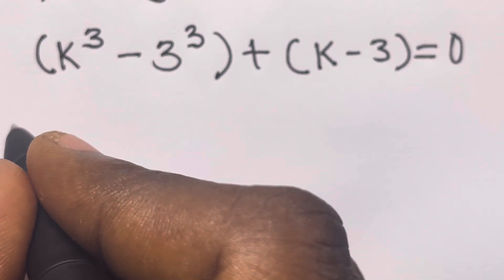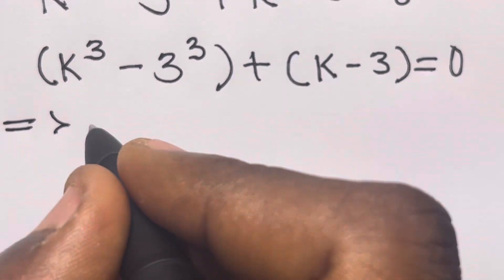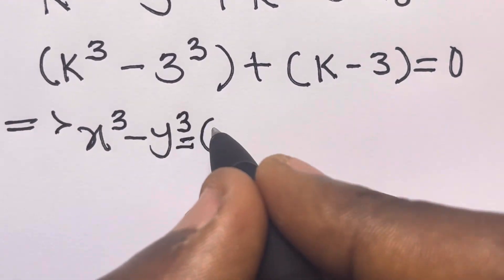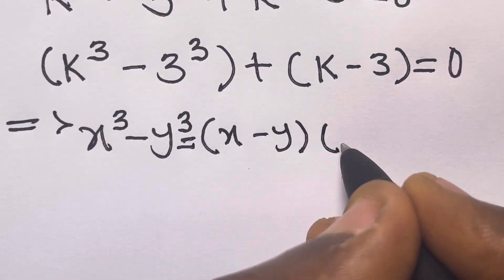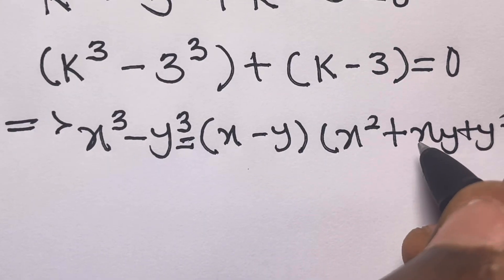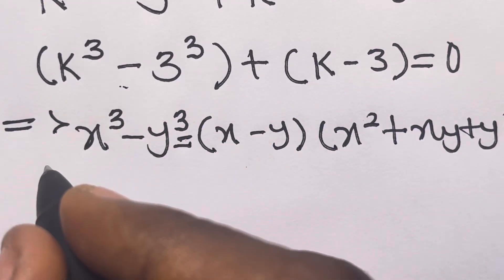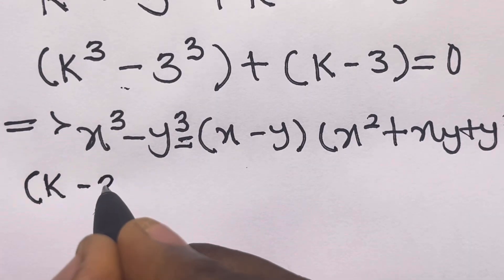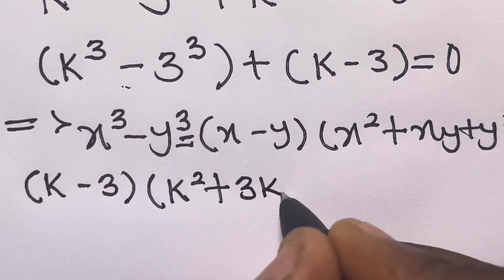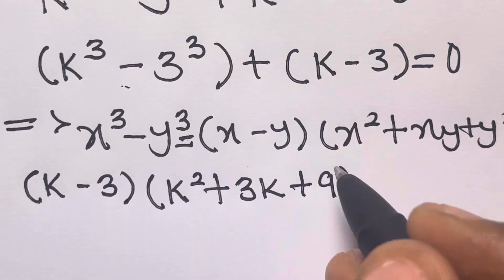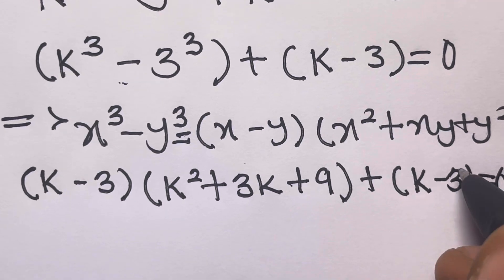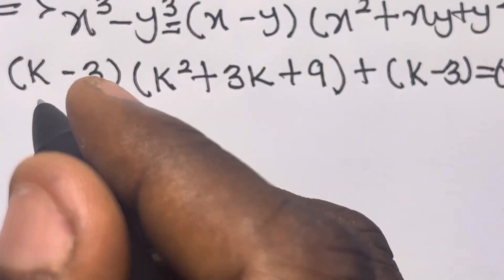Recall that x cubed minus y cubed equals (x minus y)(x squared plus xy plus y squared). Applying this to k cubed minus 3 cubed, we get (k minus 3)(k squared plus 3k plus 9), and don't forget the remaining plus k minus 3 term, so the full expression equals zero.